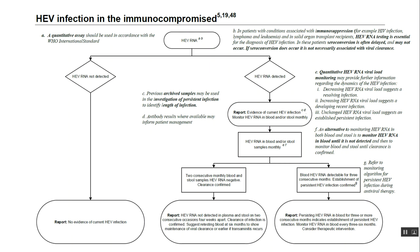In these patients, HIV RNA testing is essential for diagnosis of HIV infection, because seroconversion is often delayed and sometimes may not even occur. And even if seroconversion does occur, it is not necessarily associated with viral clearance. Preferably, a quantitative assay should be used as per the WHO standard.